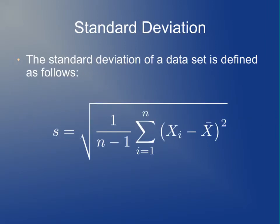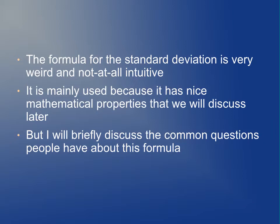One final statistic that we're going to discuss today is the standard deviation. You may or may not be familiar with this, but the way you calculate the standard deviation is you take the mean, then you take the difference between each observation and the mean, square it, divide by the number of observations minus 1, and then take the square root of all that. Now if you've never seen this before, you're probably wondering why on earth anybody would care about this. Like I said, it's a strange formula and not particularly intuitive. It mainly gets used because it has some nice mathematical properties that we'll discuss later on. But if you've never seen this before, I'll briefly discuss some of the questions that people have about this formula.